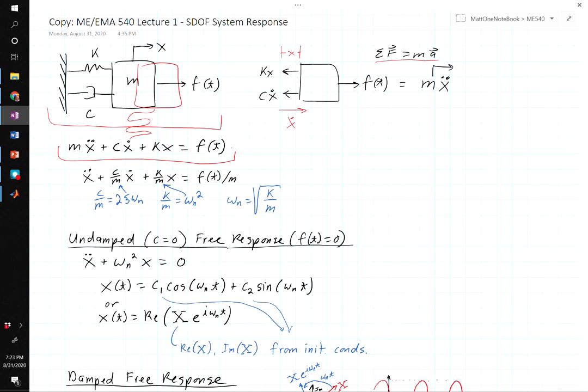We usually write this in a second order form. We divide through by the mass and call this quantity c over m 2ζωn where ζ is the damping ratio. And k over m is called the natural frequency squared. We see in a second why we use those definitions. The natural frequency is the square root of the ratio of the stiffness to the mass.